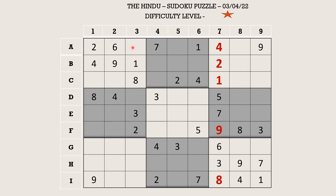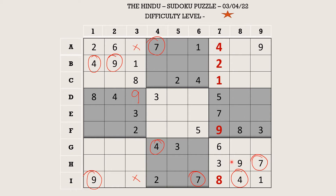Similarly, in the same pattern we can fill column 3. Here we have a 9 in column 2 and a 9 in column 1 which blocks these two columns, so 9 goes in D3. There is a 4 and 7 here which blocks this cell, and similarly in row I there is a 4 and 7 which blocks this cell. So 4 and 7 go in these two cells — G3 takes 7 and H3 takes 4.